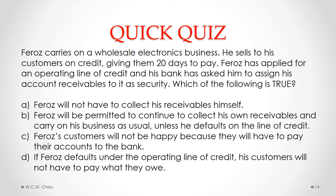A quick quiz question: Faroes carries on a wholesale electronics business and sells to his customers on credit, giving them 20 days to pay. Faroes has applied for an operating line of credit and his bank has asked him to assign his accounts receivables to it as security. Which of the following is true? The answer is B: Faroes will be permitted to continue to collect his own receivables and carry on his business as usual unless he defaults on the line of credit.